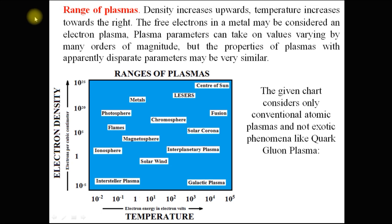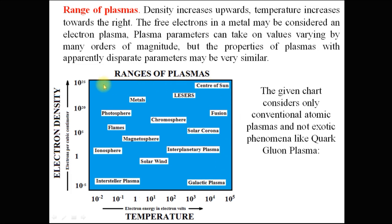We will talk about the range of plasmas. In nature, there are many types of plasmas present. On the basis of electron density and temperature, we can differentiate various types of plasmas. Temperature is taken on the x-axis and is measured in electron volts; on the y-axis, electron density is taken and measured in electrons per cubic centimeter. Interstellar plasma has lower temperature as well as lower electron density. In solar wind, moderate temperature and electron density is observed. But in the center of the sun, there is a large amount of temperature as well as large electron density.